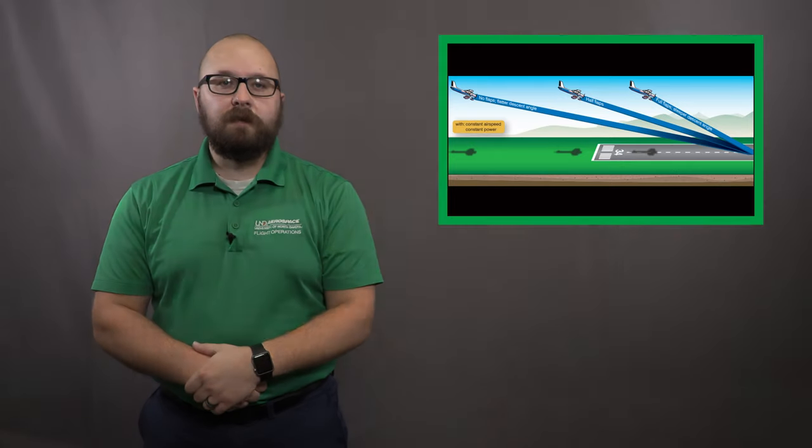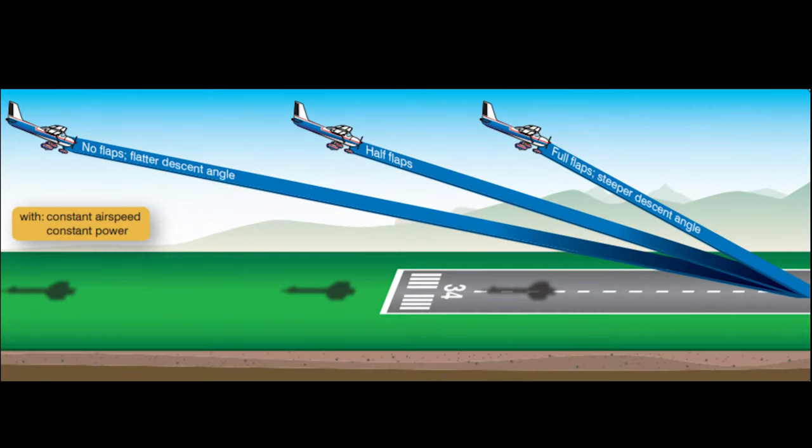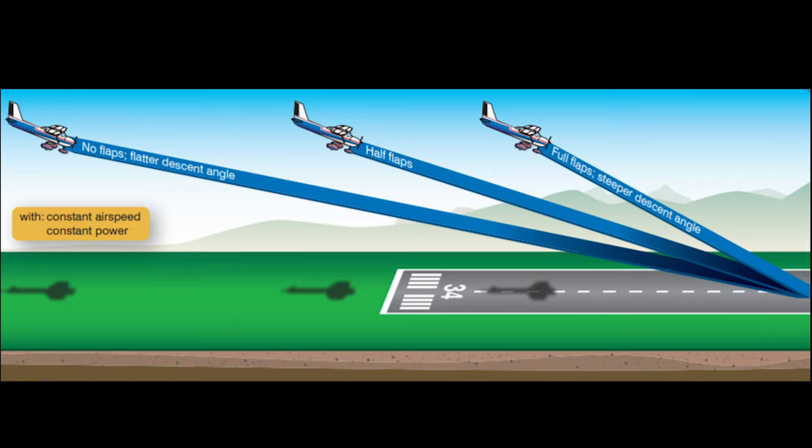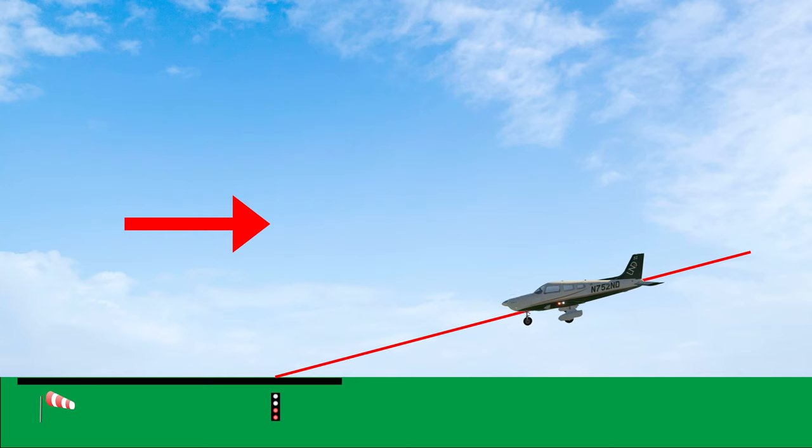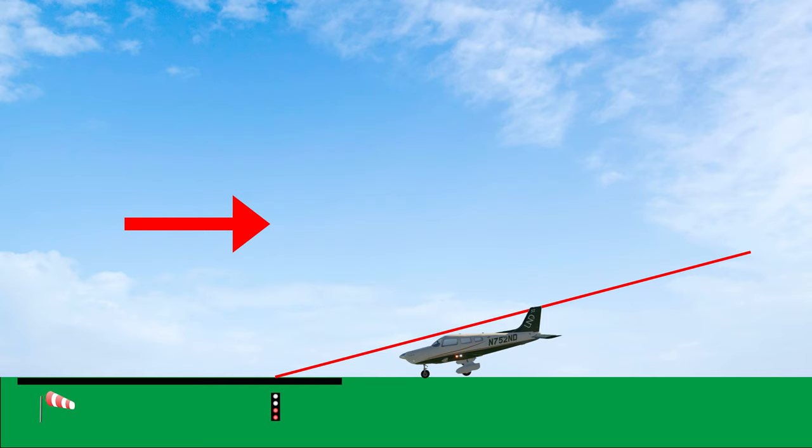To better understand this concept, think about what flaps allow us to do on landing. They allow us to fly a steeper and slower approach. When you add a headwind component, your ground speed slows down and if no corrections are made, you will not be able to maintain the glide path. The proper way to account for this is to turn your base earlier and plan to fly a steeper final descent angle, assuming you are flying a constant airspeed and power setting.